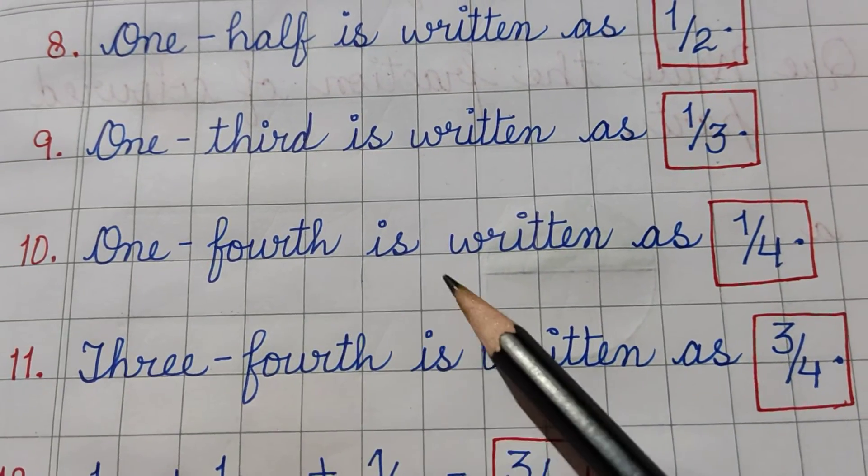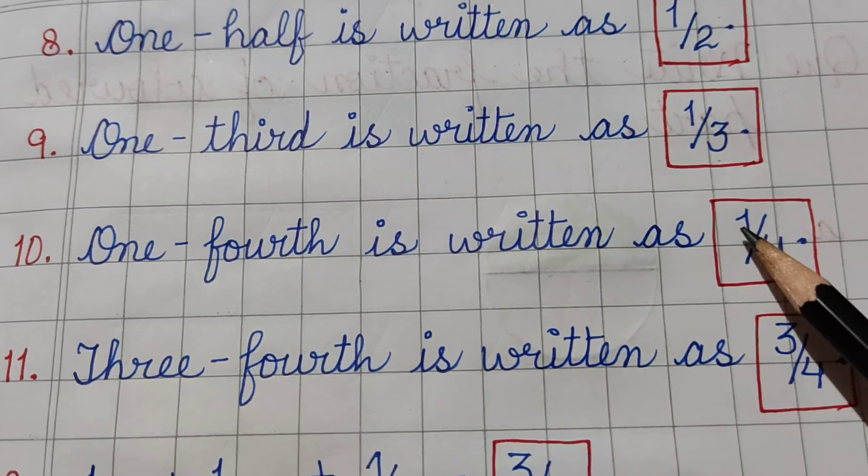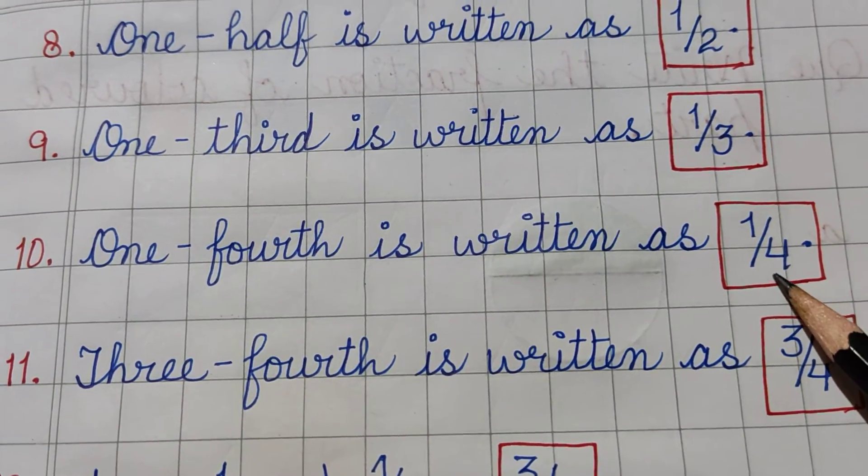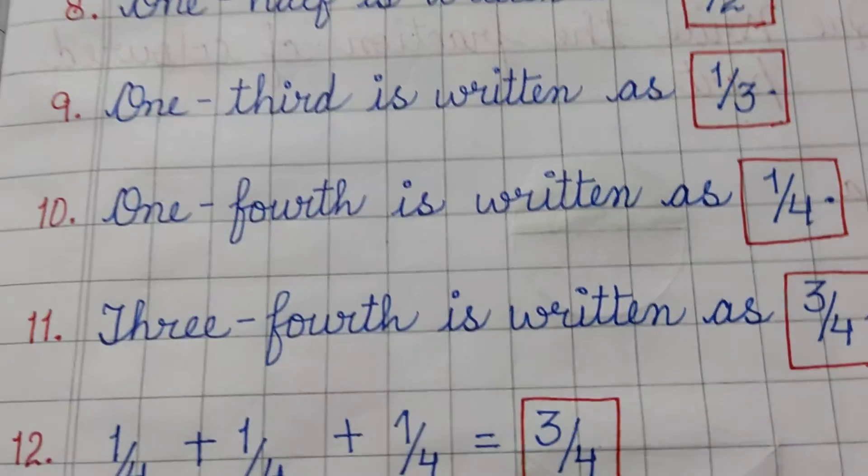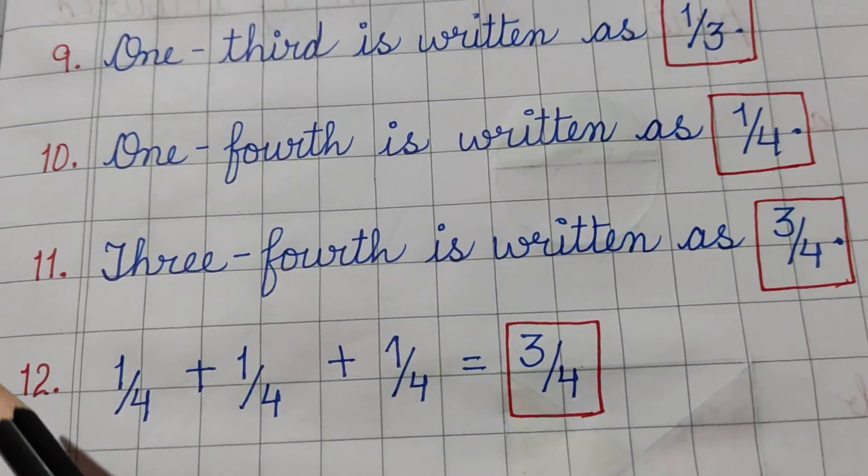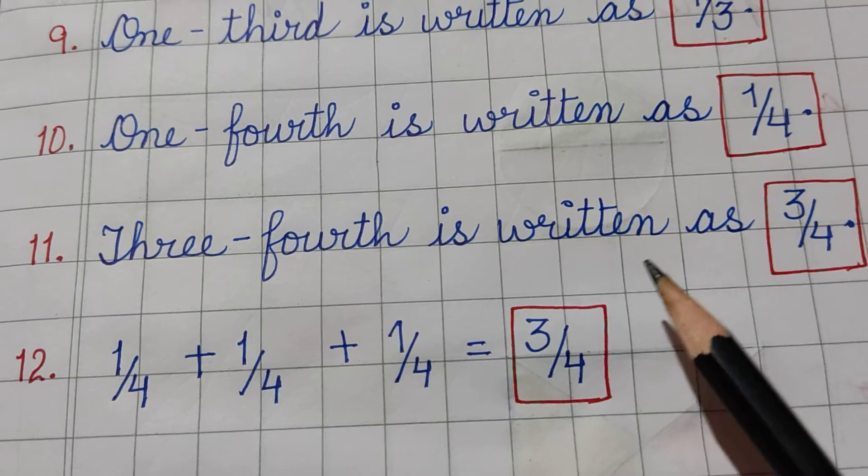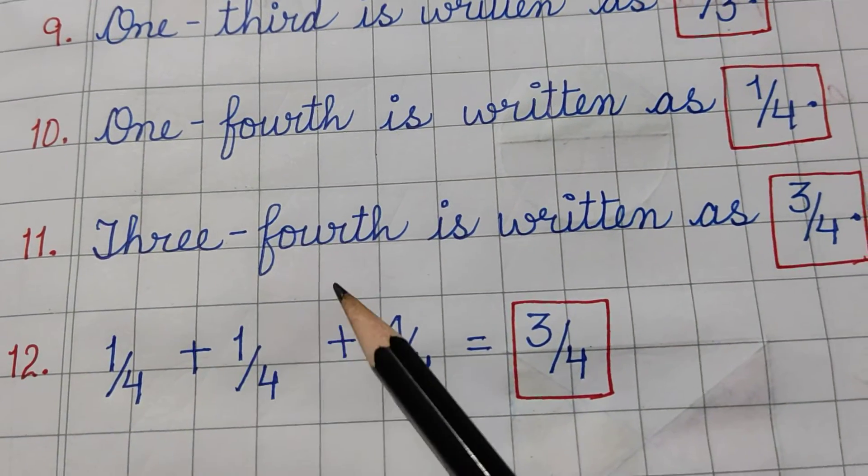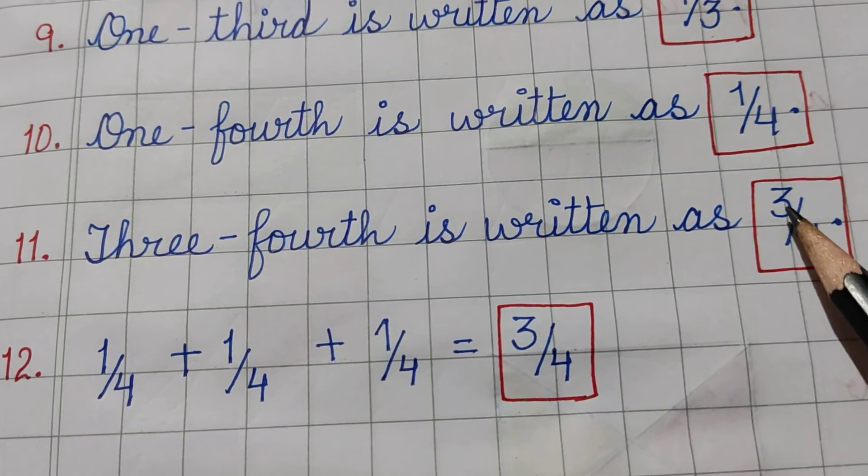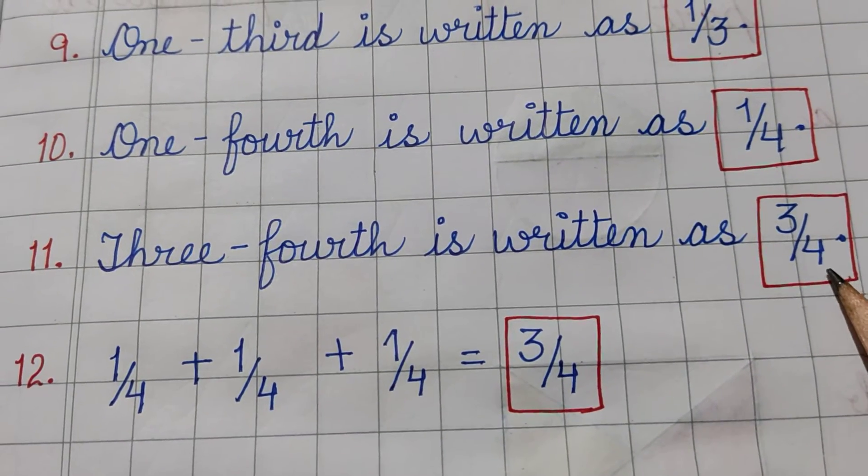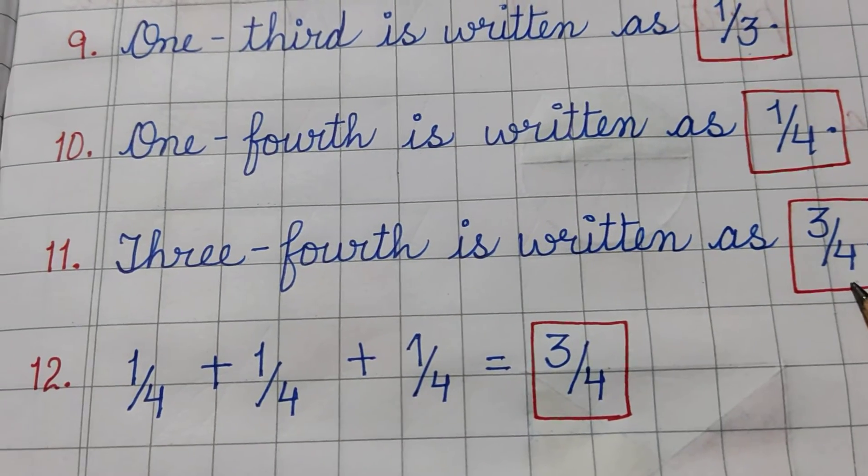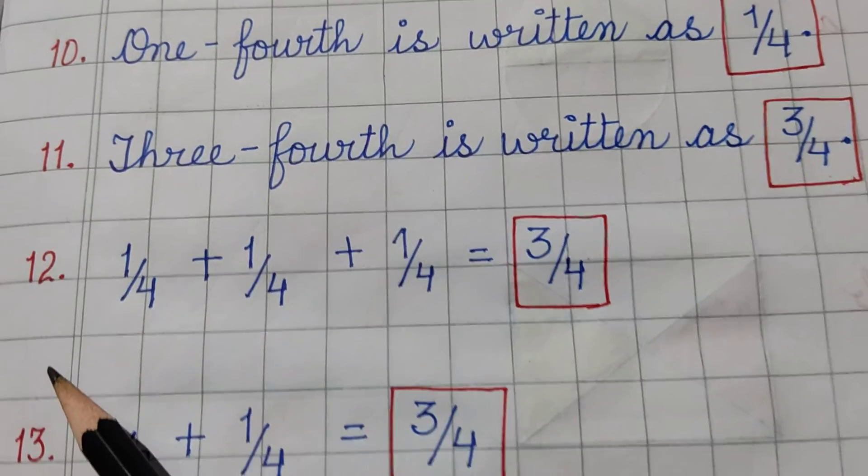Number 10th is 1 fourth is written as 1 upon 4. 11th one is 3 fourths is written as 3 upon 4, you can say 3 upon 4 or you can say 3 by 4.